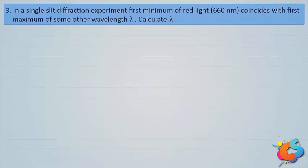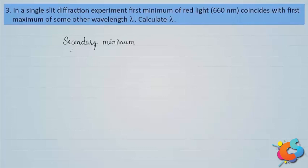In a single slit diffraction experiment, the first minimum of red light of wavelength 660 nanometer coincides with the first maximum of some other wavelength λ. Calculate λ. This problem is based on the formula for angular position of minimum and angular position of maximum. We will solve it using angular positions.